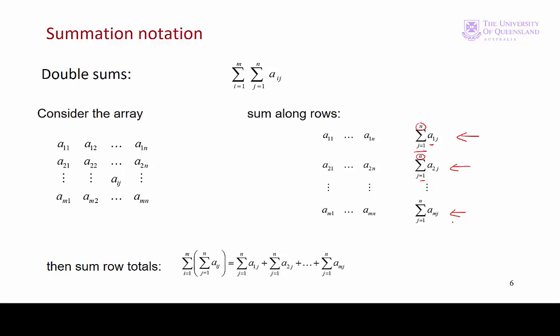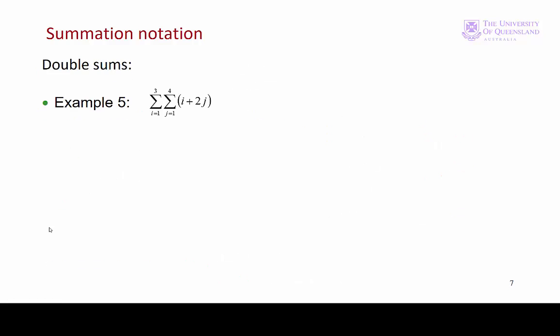And the second step then is to sum those row totals. So we go from row 1 to row m. So that's row 1 there to row m, summing up those row totals. Let's see how we put that into practice with this example.